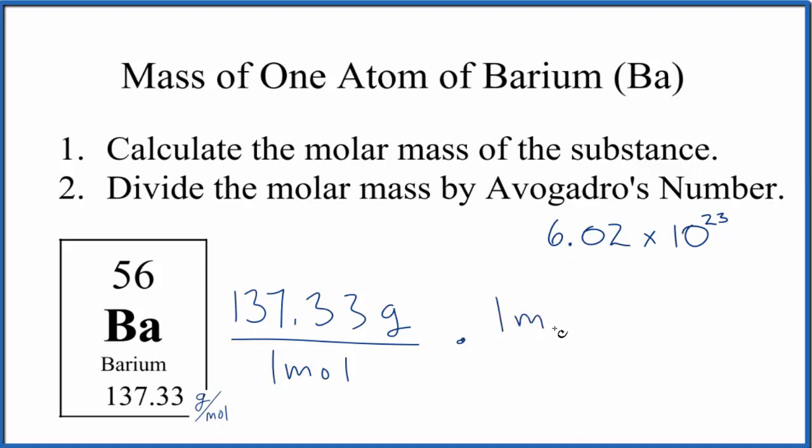We know that one mole of any substance has Avogadro's number of particles. So when we multiply, we have moles on the bottom and the top. They'll cancel out. We'll be left with grams, and we'll know we did it the correct way.